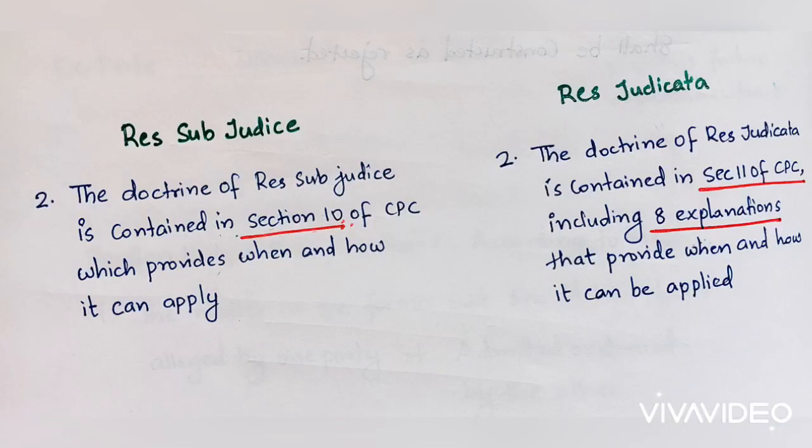Difference number two: the doctrine of res sub judice is contained in Section 10 of the CPC, which provides when and how it can apply. The doctrine of res judicata is contained in Section 11 of the CPC, including eight explanations that provide when and how it can be applied.